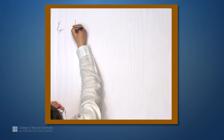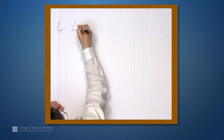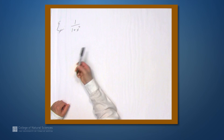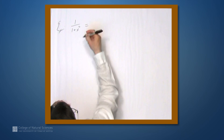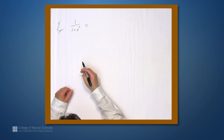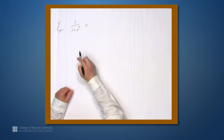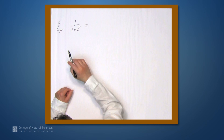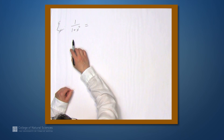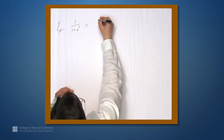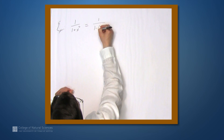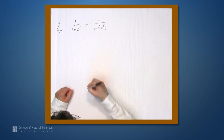Let's look at one more example — this one will come up again in a moment. Consider 1 over 1 plus x squared. We want to apply the geometric series idea from 1 over 1 minus x, but here we're adding x squared, not subtracting it. So let's start by writing this as 1 over 1 minus negative x squared, making negative x squared the thing being subtracted.